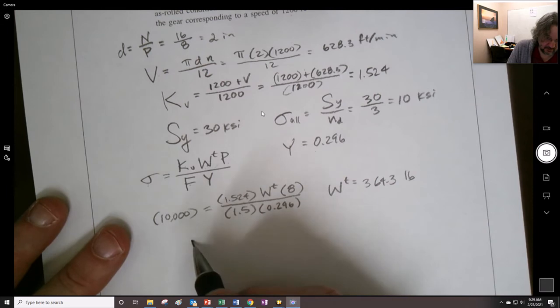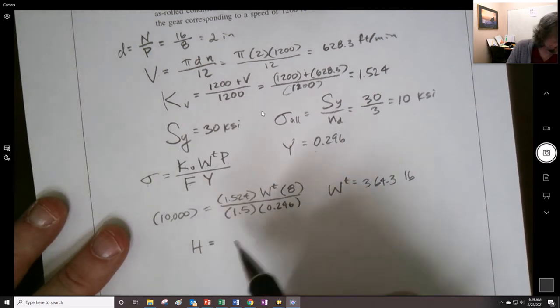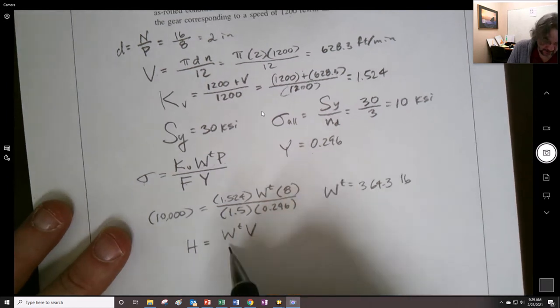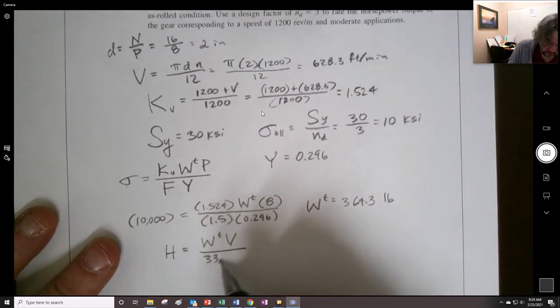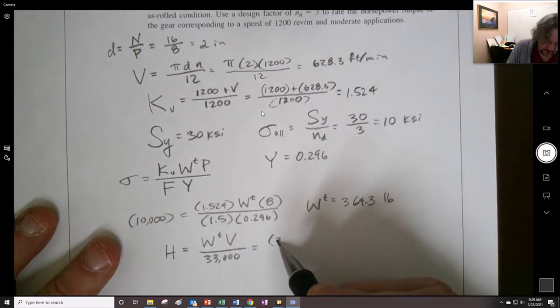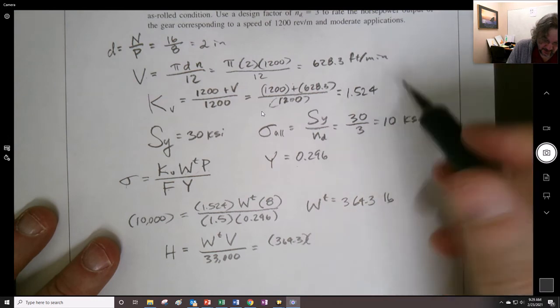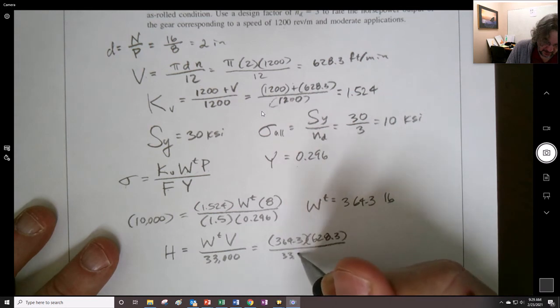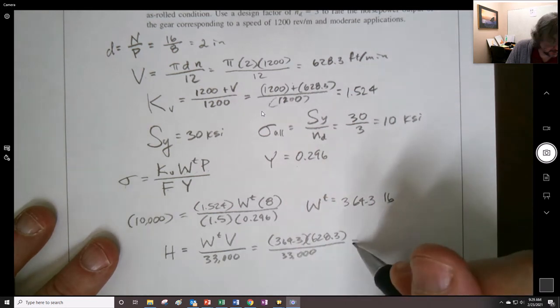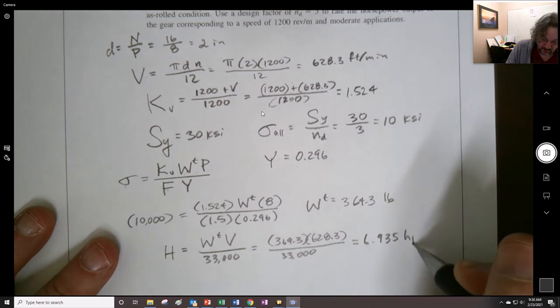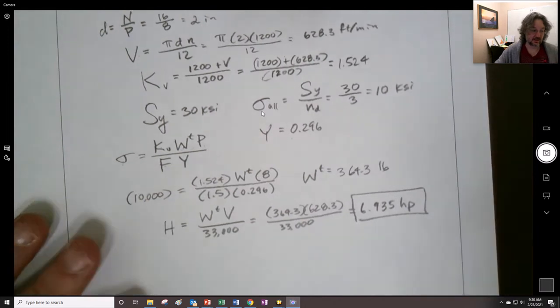And now, if we want the horsepower, we use this equation with that constant put into there. So you get 364.3 times our 628.3 divided by 33,000. And we end up with 6.935 horsepower is what we're going to say this thing is rated.